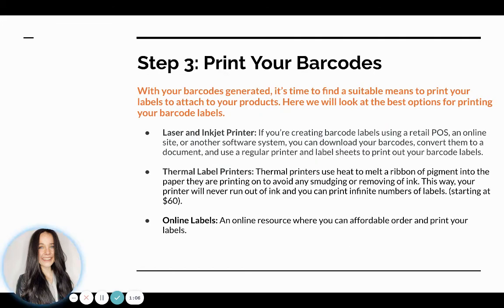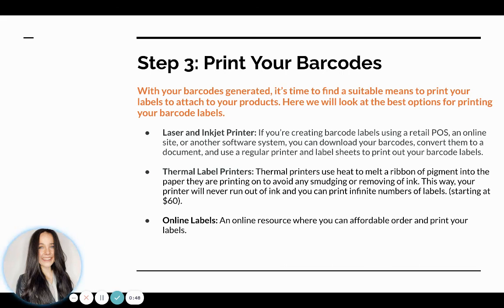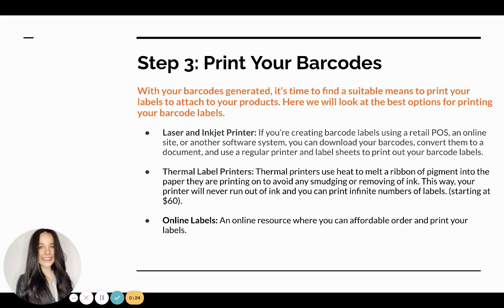Moving on to step three, this is the printing step and the easiest part. You just have to decide which printer you're going to use, make sure you get the right kind of paper, and have the right settings on your printer. You can use a laser or inkjet printer — generate your barcodes into a document or PDF and then print them. There are also thermal label printers, which don't use ink; they use heat to create a ribbon of pigment on the paper. That's great if you're printing in bulk, since you'll never have to worry about running out of ink.